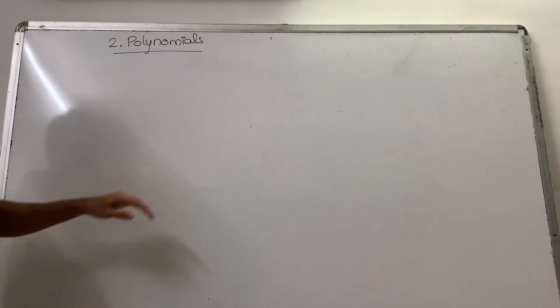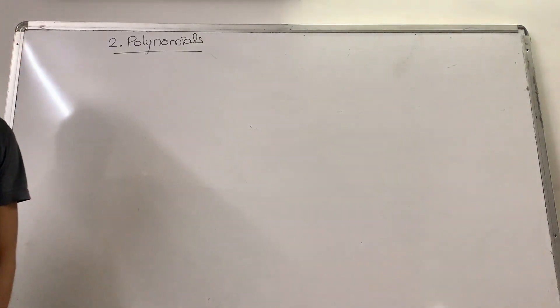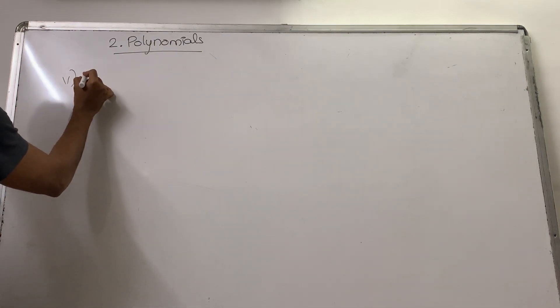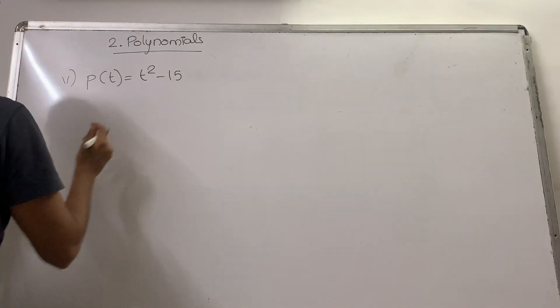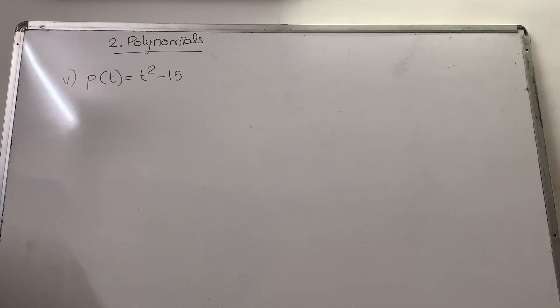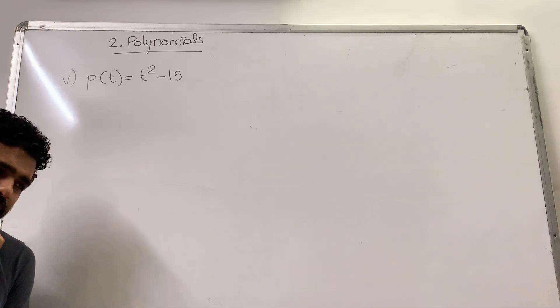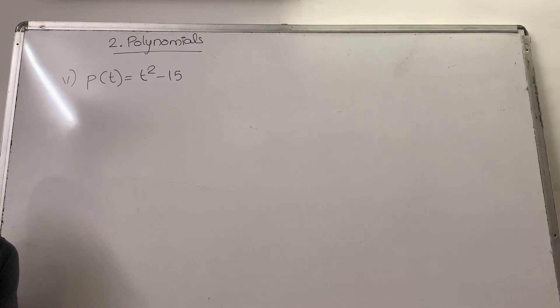Hello kids, in this video we will continue with Exercise 2.2. In the last video we saw the first four questions of question 1 of Exercise 2.2, so we will continue with the fifth sum, which was to find zeros and verify the relationship. In the fifth question, the variable used is t. You observe that it is not a quadratic trinomial, it is a quadratic binomial. Had it been a quadratic trinomial, we would have done splitting the middle term.